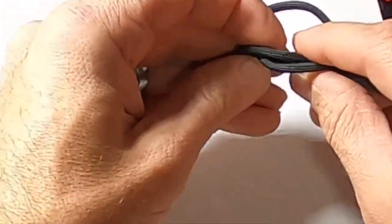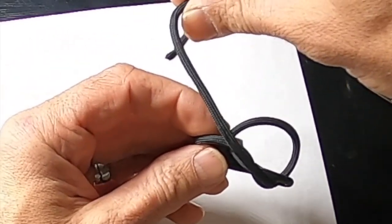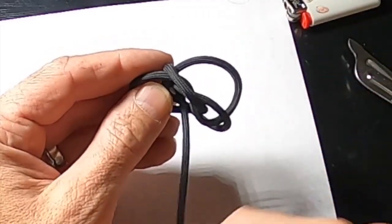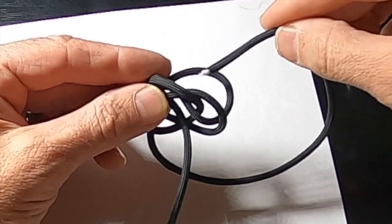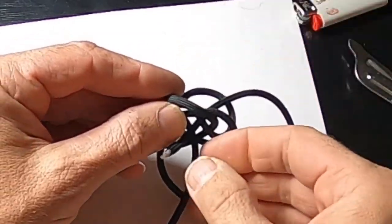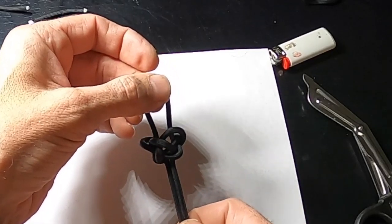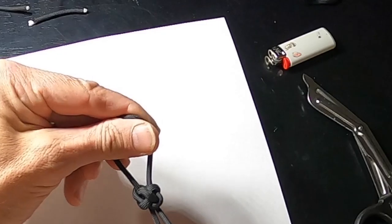We're going to adjust the loop size, bring this around the front through that square. Bring this one around the back through that square as well. Now pull these, and there is our knot.